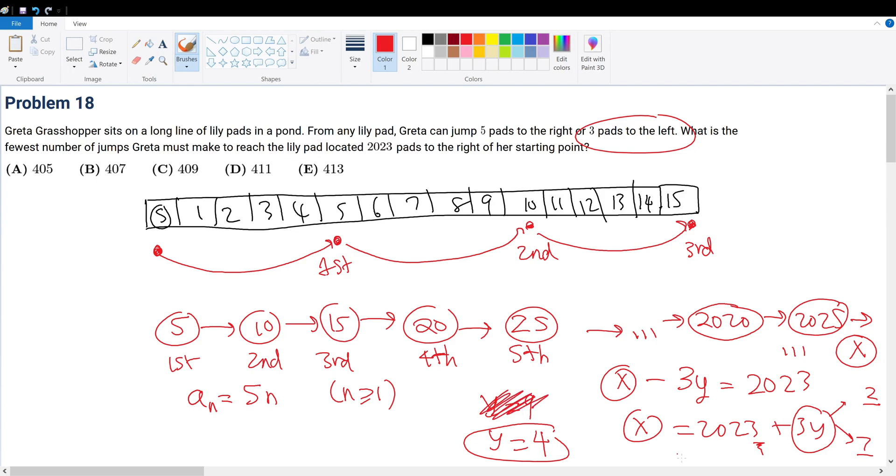When y is equal to 4, then what is the ultimate block we land on? Well, x will be equal to 2023 plus 12, so that's 2035.